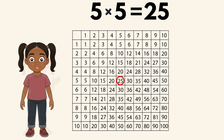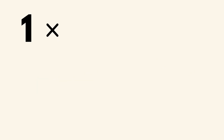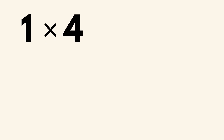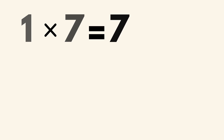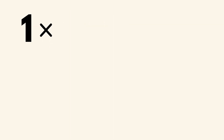Now that you've mastered how to multiply properly, it is practice time. One times one equals one. One times two equals two. One times three equals three. One times four equals four. One times five equals five. One times six equals six. One times seven equals seven. One times eight equals eight. One times nine equals nine. One times ten equals ten.